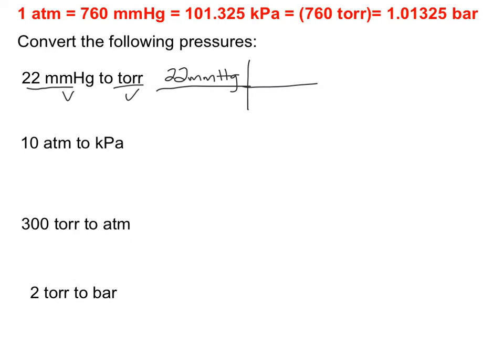So in this case, we're going to put what we want over what we have. So we want to be in torr, so I have 760 torr to 760 millimeters of mercury. Now obviously this relationship, the 760 and the 760 is a one-to-one relationship, so you're going to get the same numbers out mathematically.